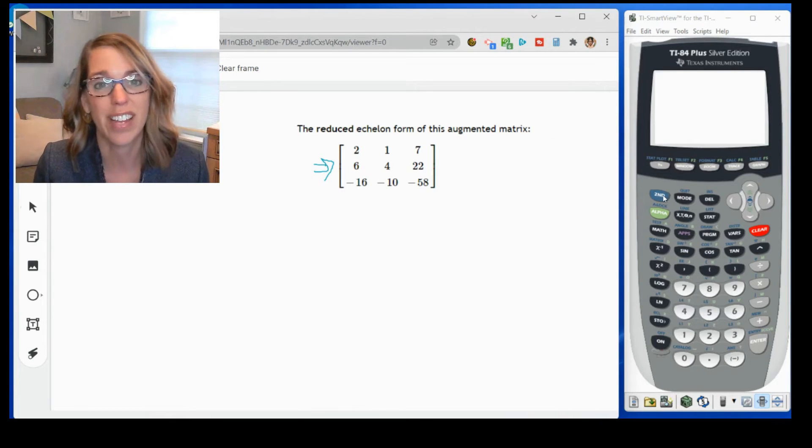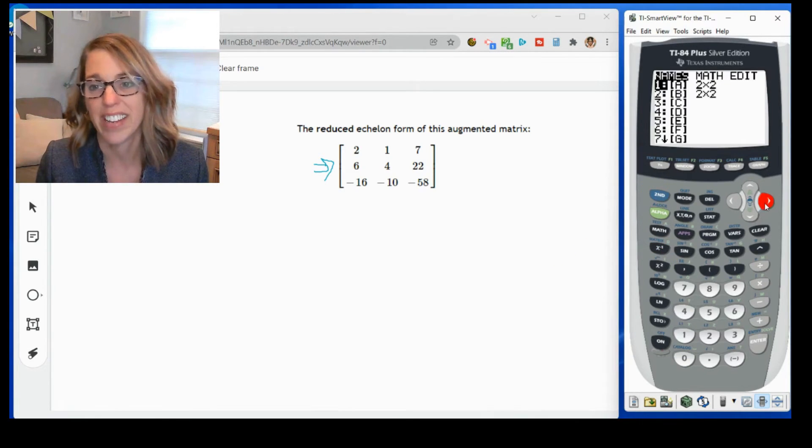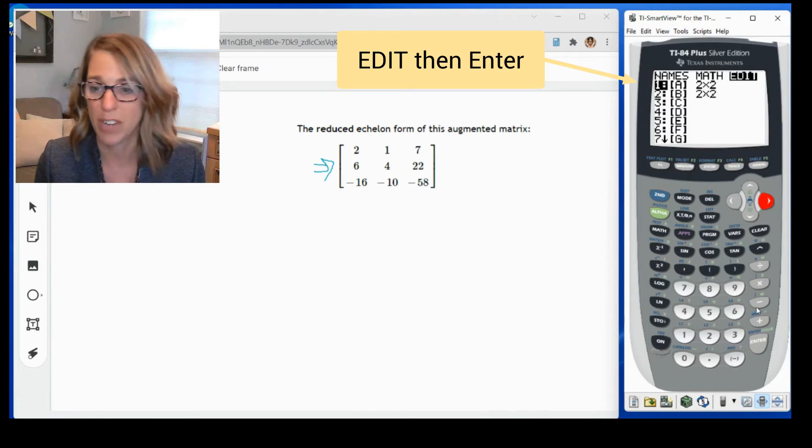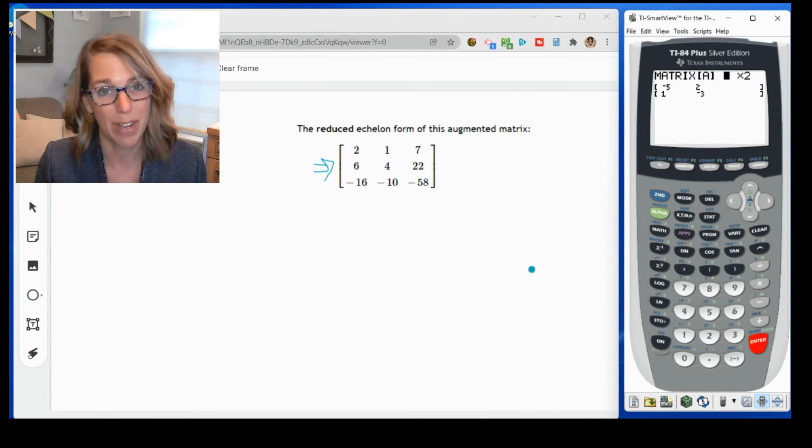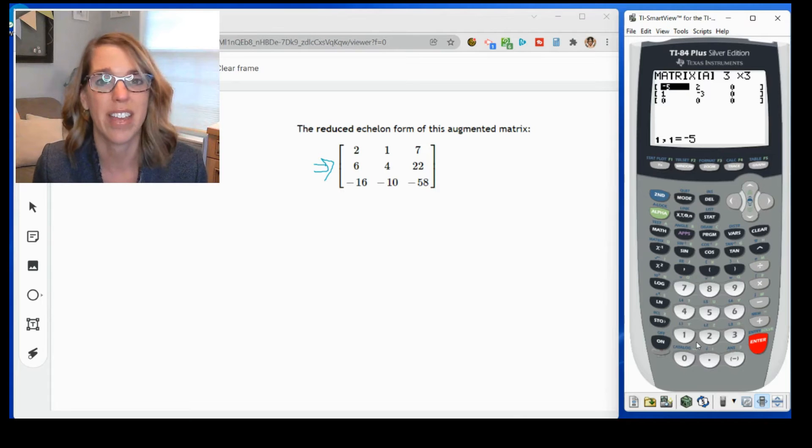So I'm going to go over to the calculator and grab the matrix menu. So that second matrix in that first column, I want to go over to edit so I can enter in a matrix. This particular matrix has three rows and three columns. So we call this a three by three. So I type three, enter, three, enter, and the calculator gives me the right size.